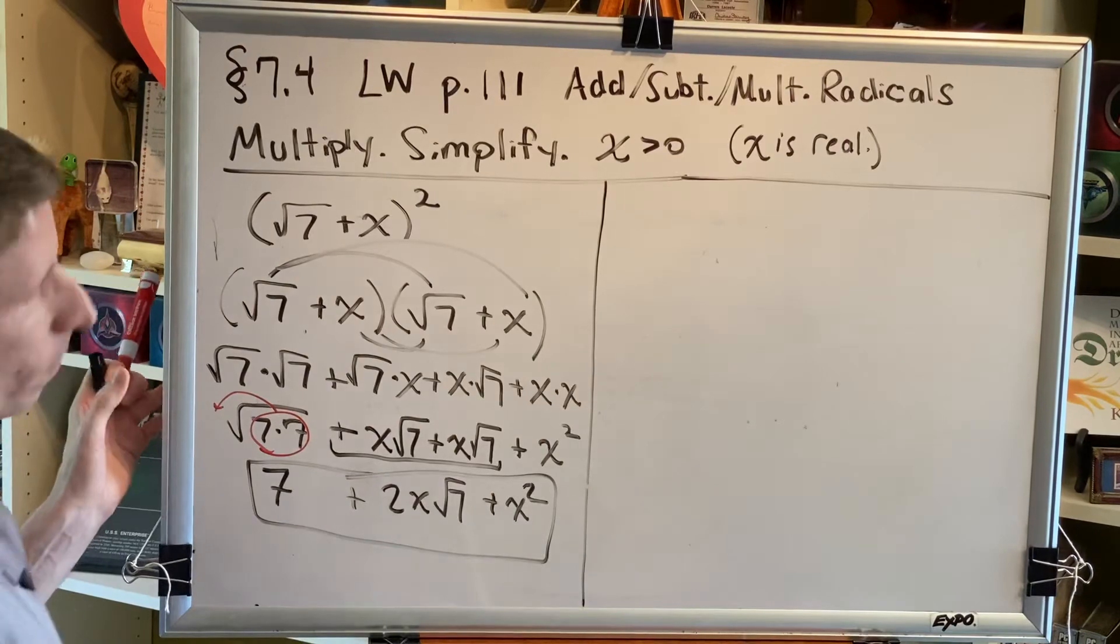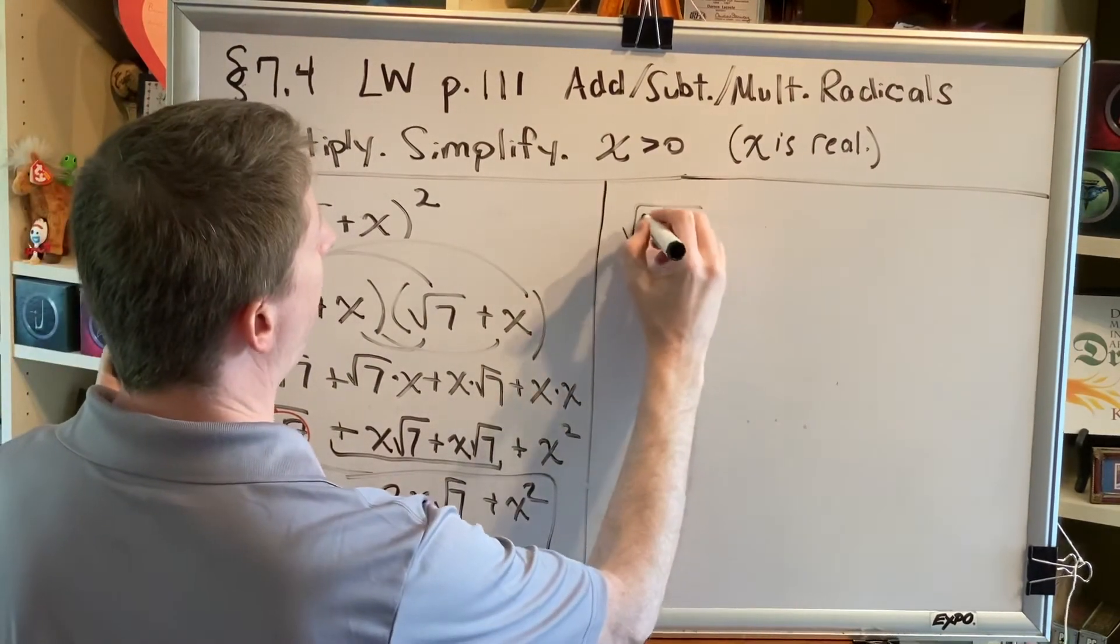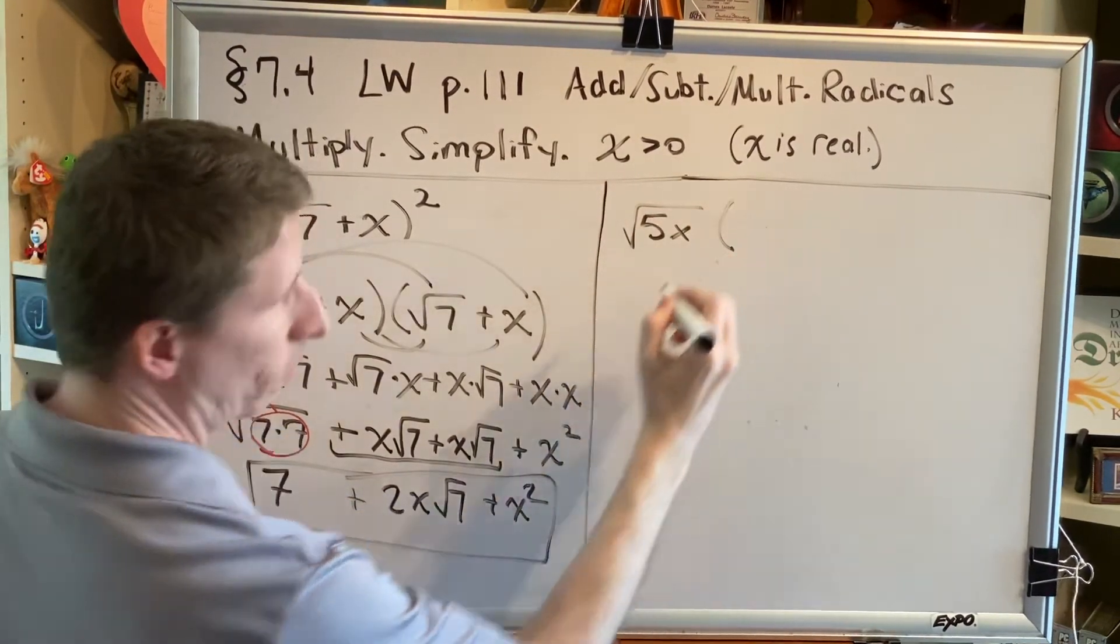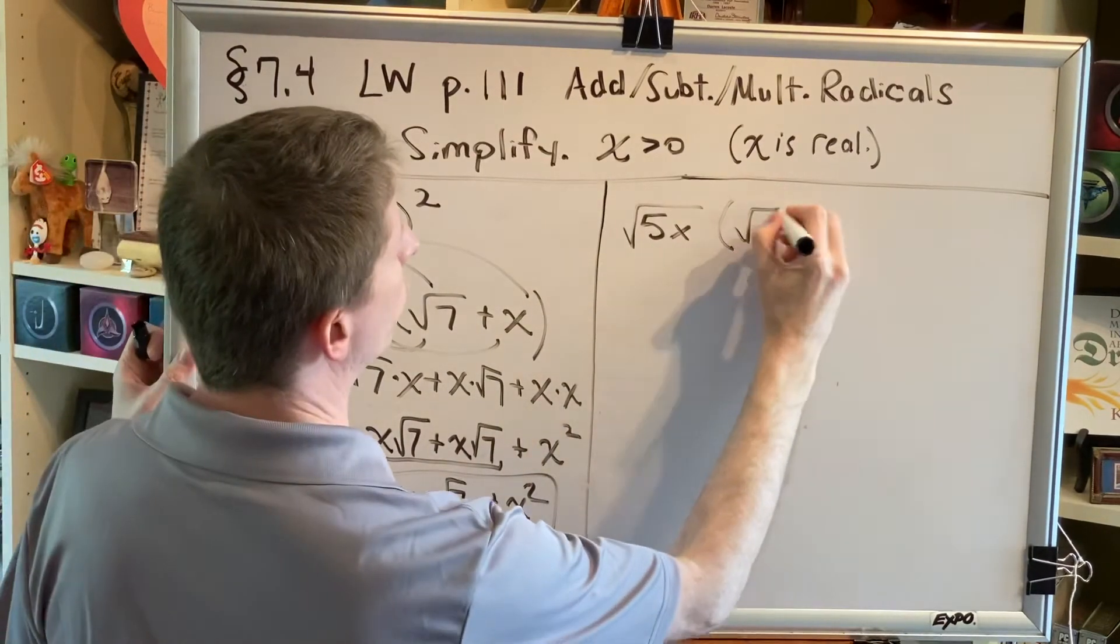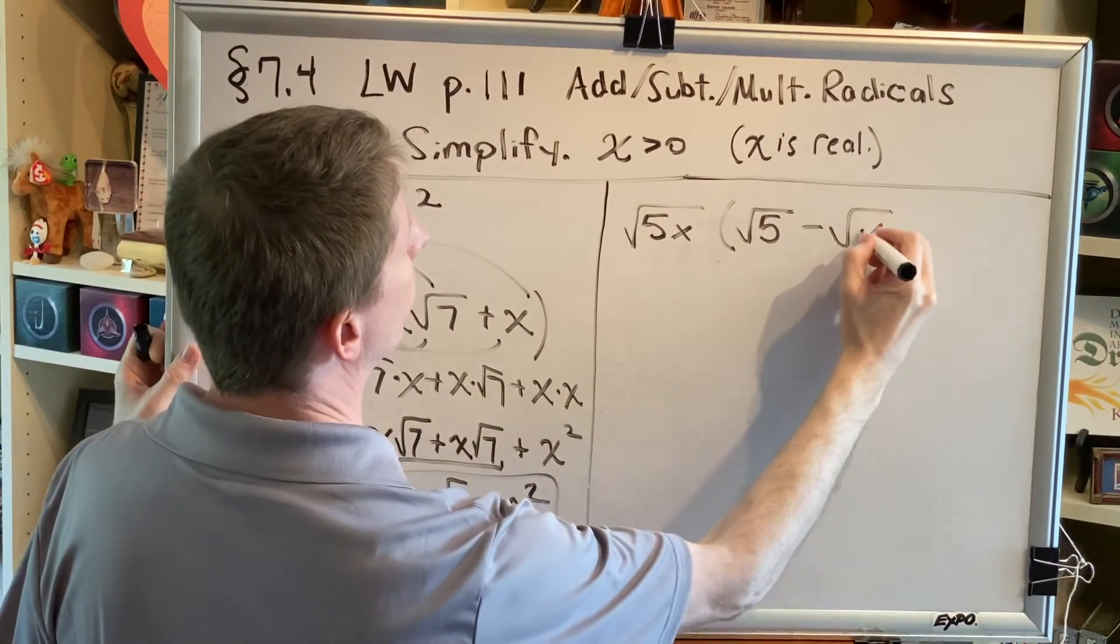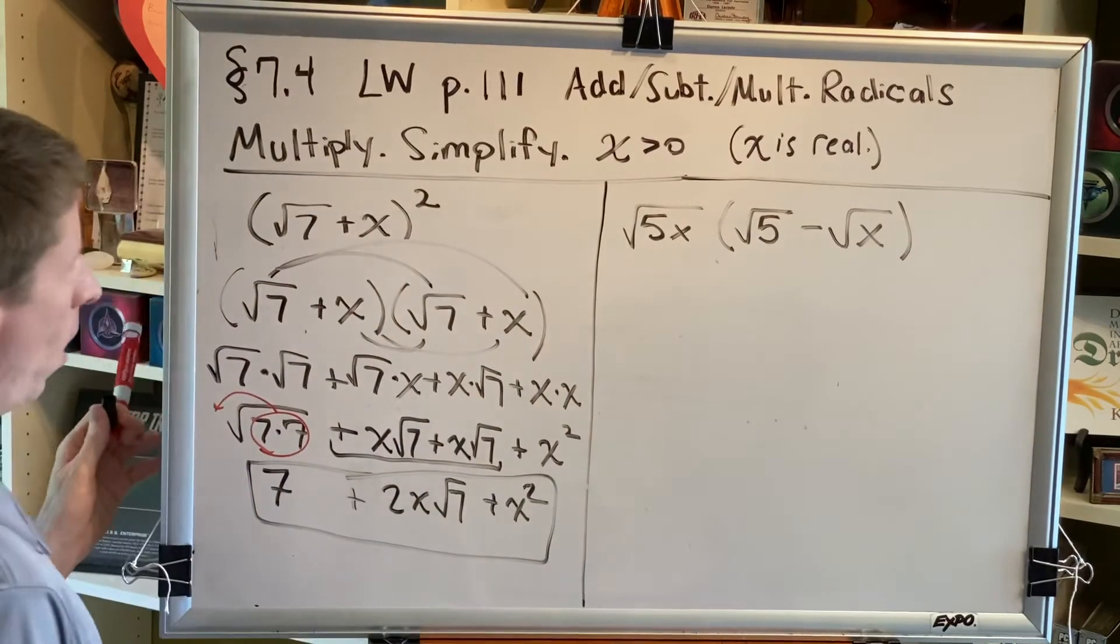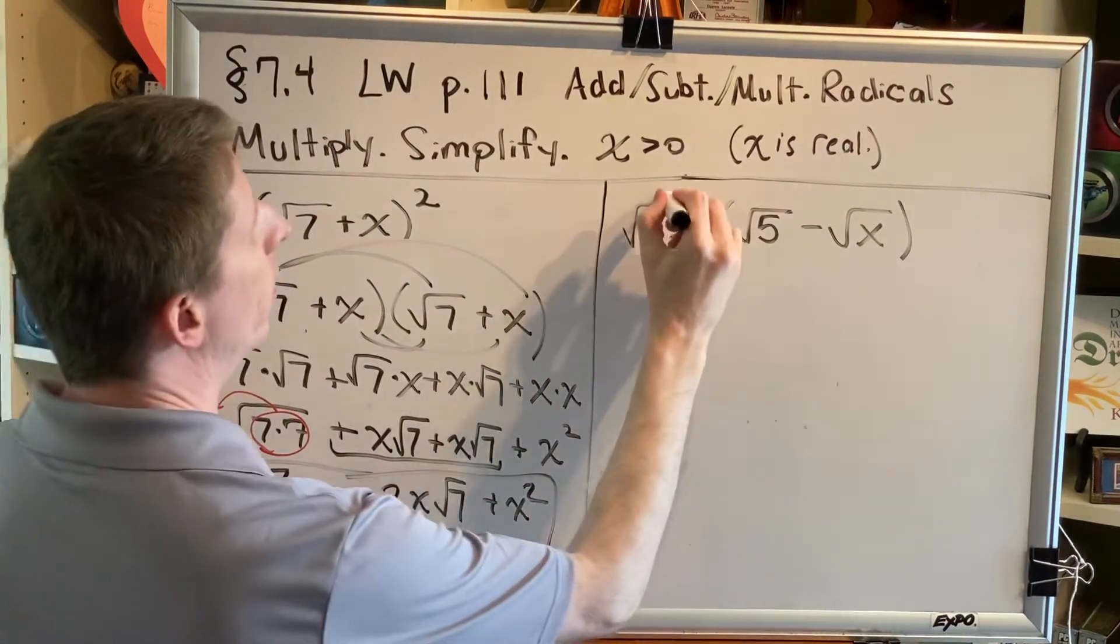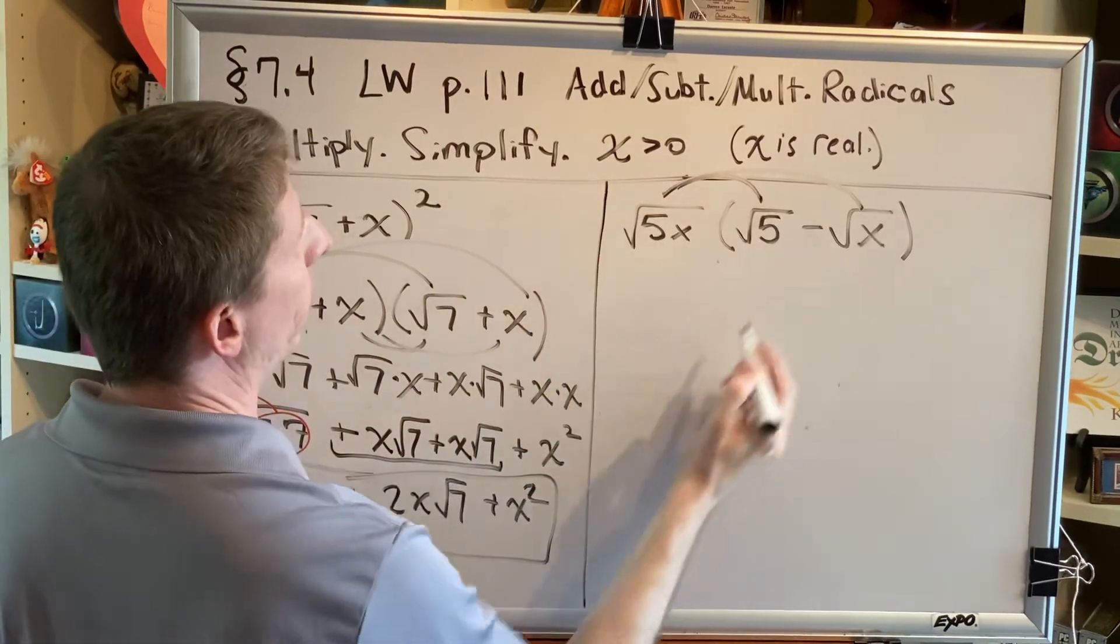Let's try another example. Square root of 5x multiplied by the difference square root of 5 minus square root of x. We have to use the distributive property here.